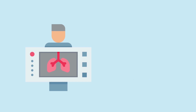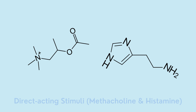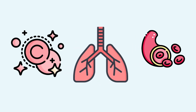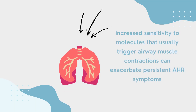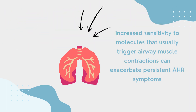Persistent AHR is better defined by AHR to direct-acting stimuli such as methacholine and histamine. Airway remodeling involves increases in airway wall thickness from increased deposition of collagen, growth of the airway smooth muscle, and increased blood flow. Due to an increase in the muscle mass of airway smooth muscle, it is possible that increased contractility and sensitization to substances which usually trigger muscle constriction of the airway exacerbate the symptoms in persistent AHR.